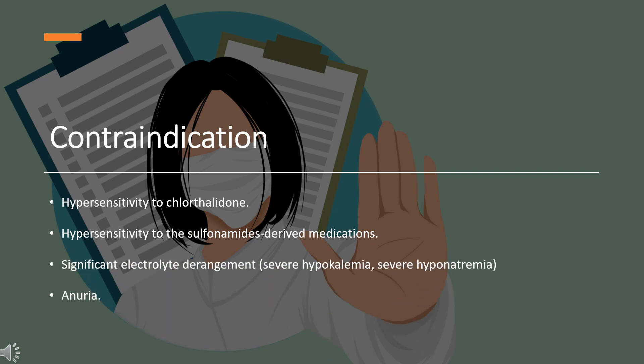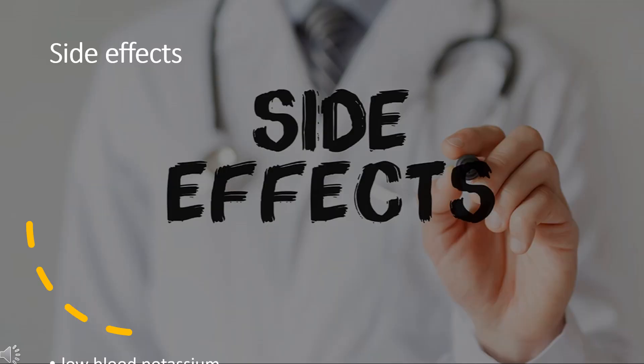Contraindications: Chlorthalidone is contraindicated for patients known to have hypersensitivity to Chlorthalidone, hypersensitivity to sulfonamide-derived medications, or significant electrolyte derangement including severe hypokalemia, severe hyponatremia, and elevated urea.